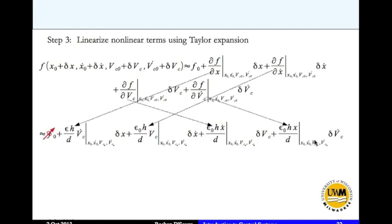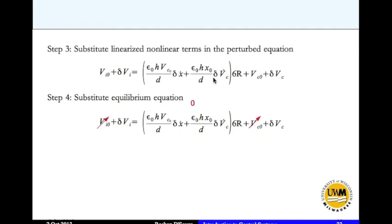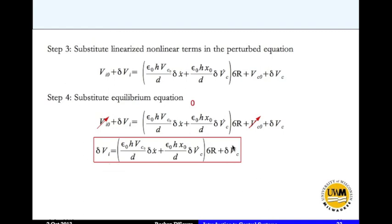Evaluating everything at the equilibrium point: vc_dot_0 = 0 so that term drops out; x_dot_0 = 0 so that term also drops out. The terms involving vc_0 and x_0 (which are non-zero) remain. This gives the linearized function. Substituting that for the perturbed non-linear terms, and applying the equilibrium equation vi_0 = vc_0 (those cancel), yields the linearized electrical equation.